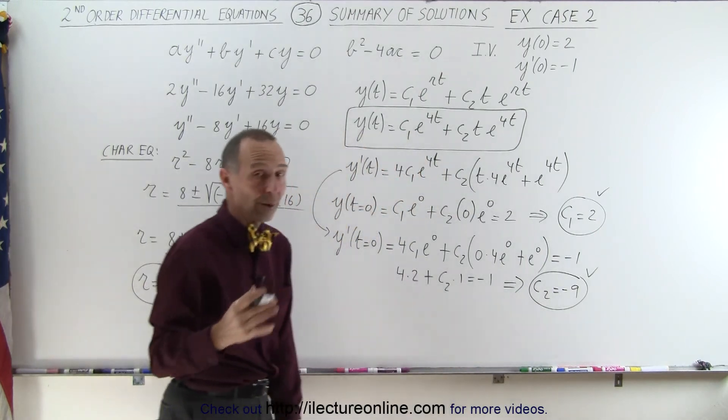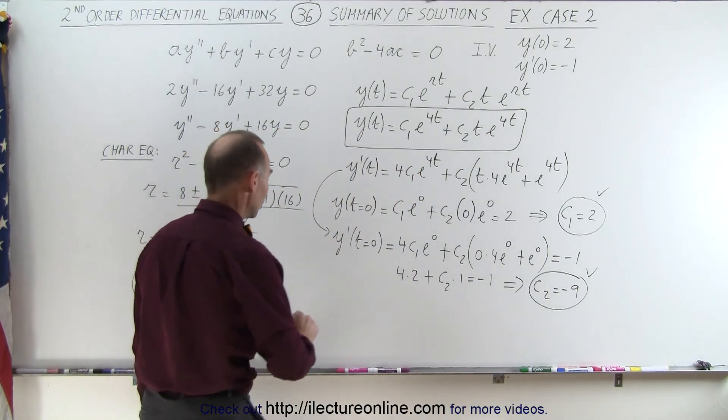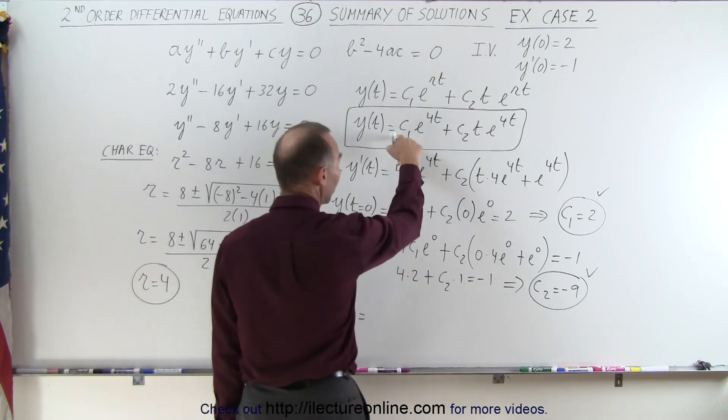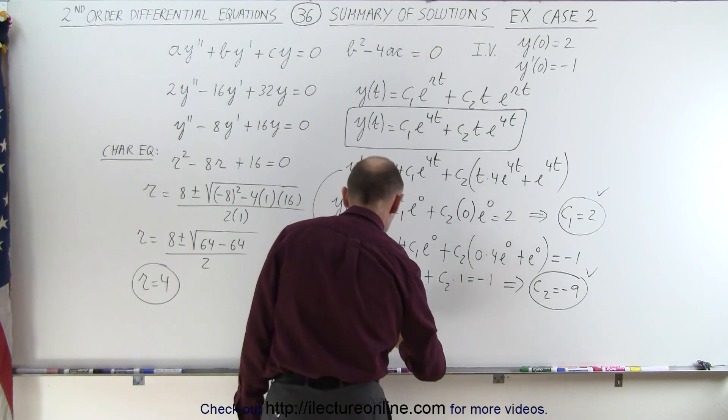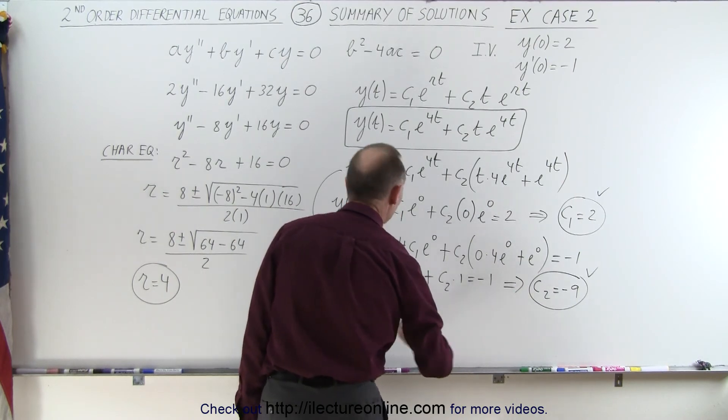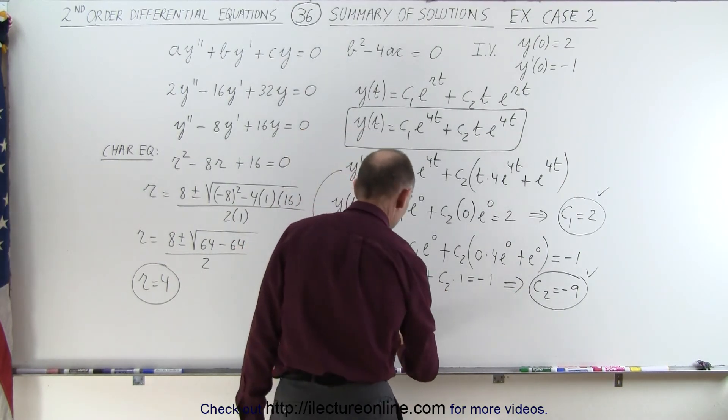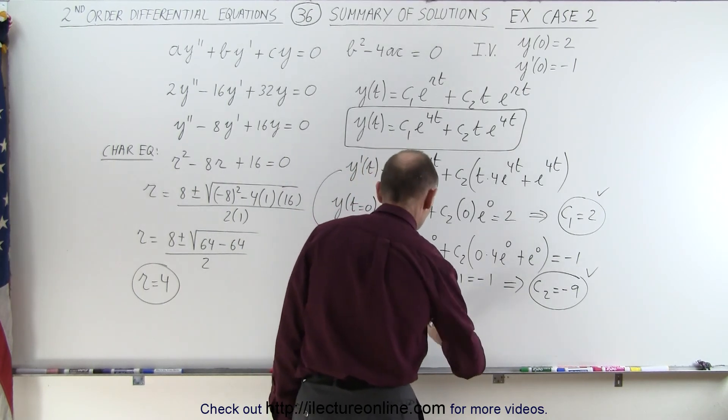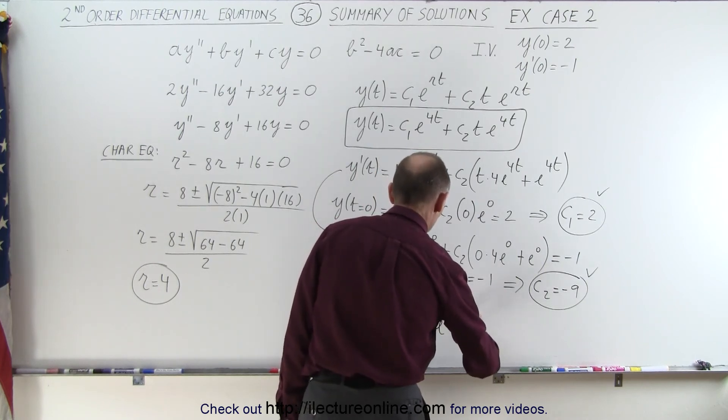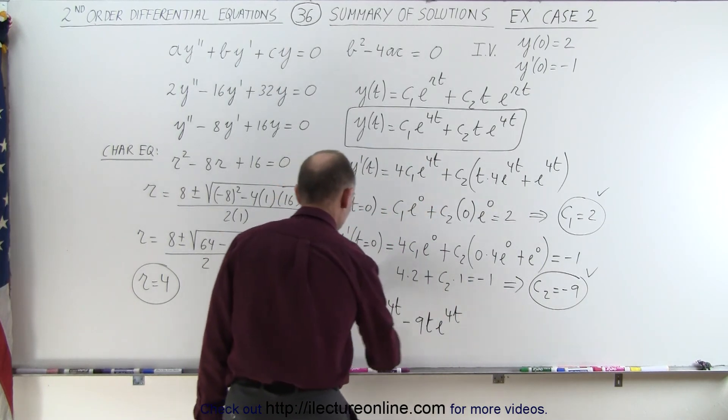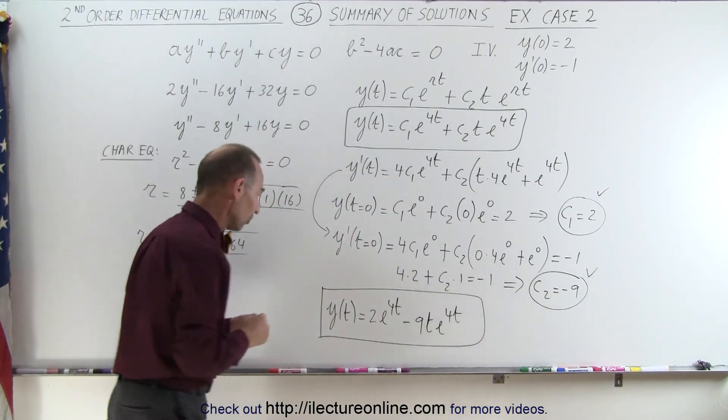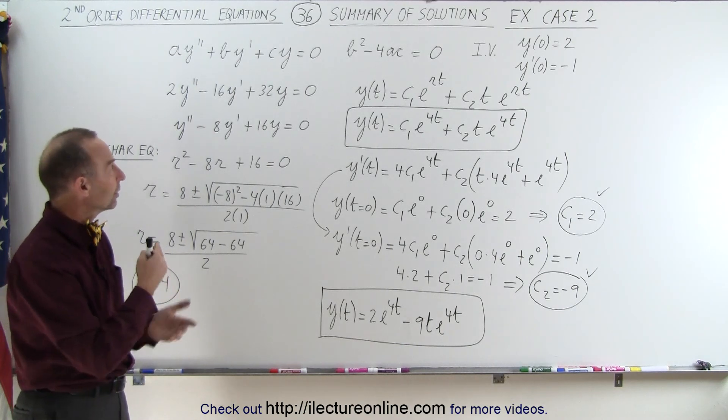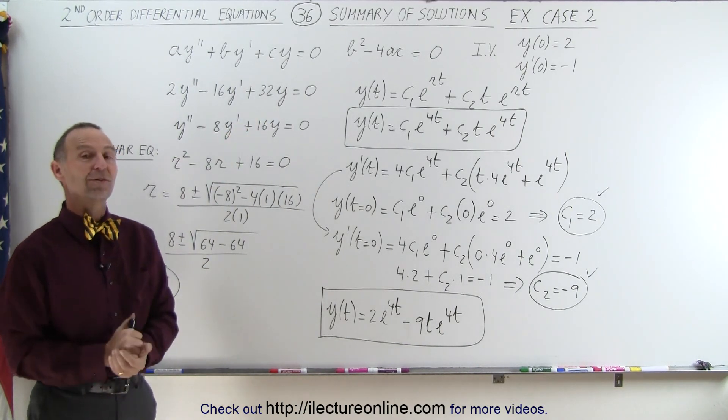y is a function of time is equal to c1, which is 2 e to the 4t, plus c2, and actually it's going to be minus because c2 is a negative number, so it's minus 9 times t times e to the 4t. And here is the exact solution to that original differential equation. And that's how it's done in the case where the b squared minus 4ac is equal to 0.